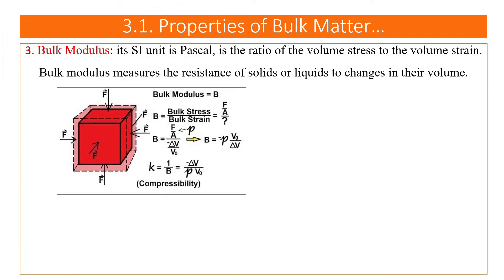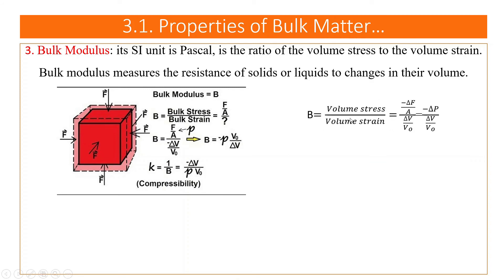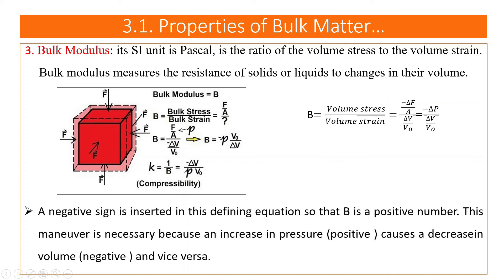The third type is bulk modulus, also with units of Pascal. It is the ratio of volume stress to volume strain, and it measures how resistant a solid or fluid is to changes in volume. Bulk modulus B = volume stress / volume strain = ΔP / (ΔV/V₀). A negative sign is inserted in the definition so that B is a positive number.